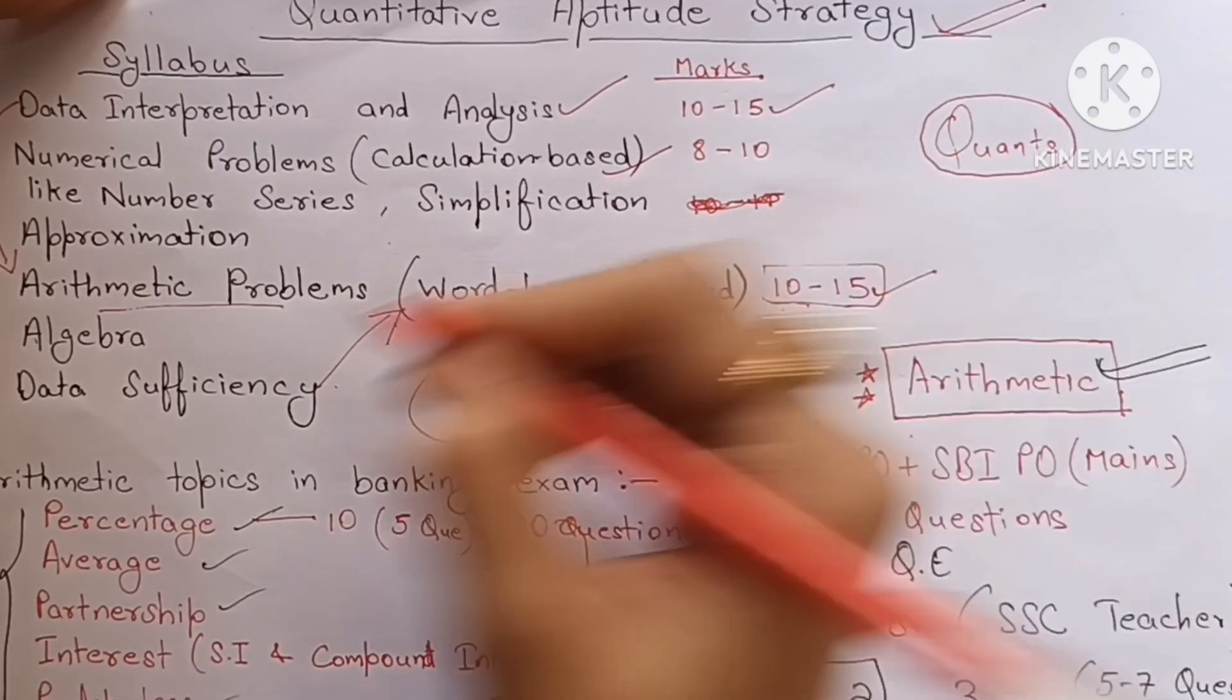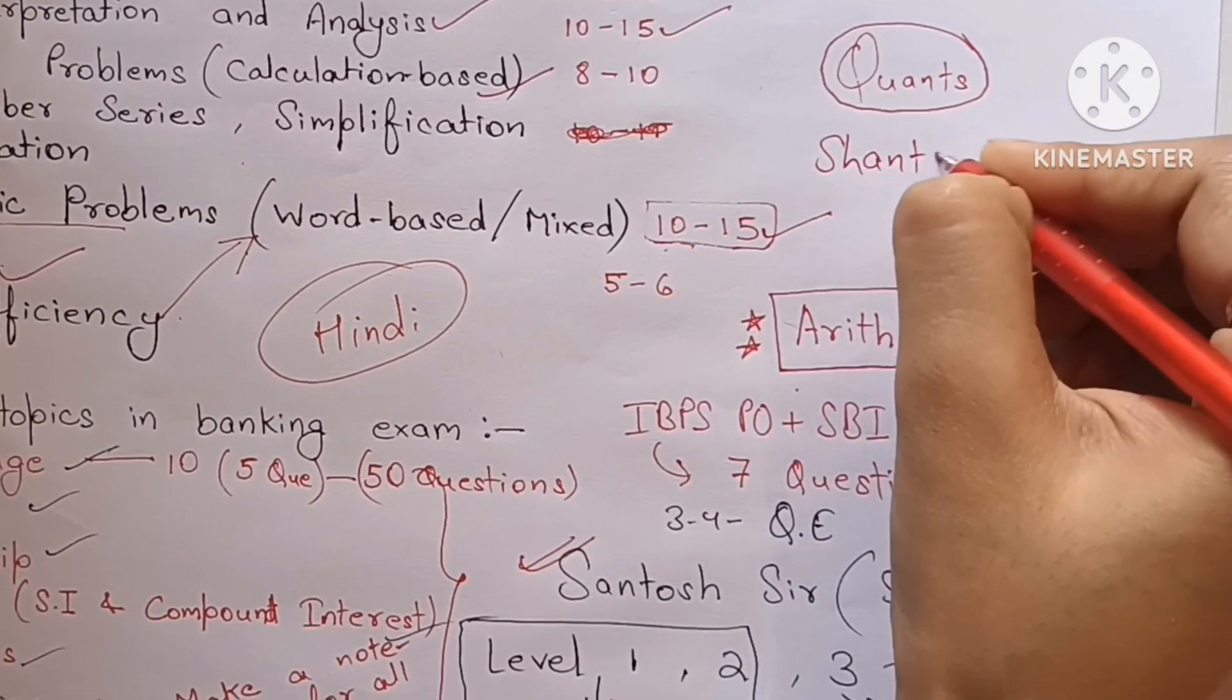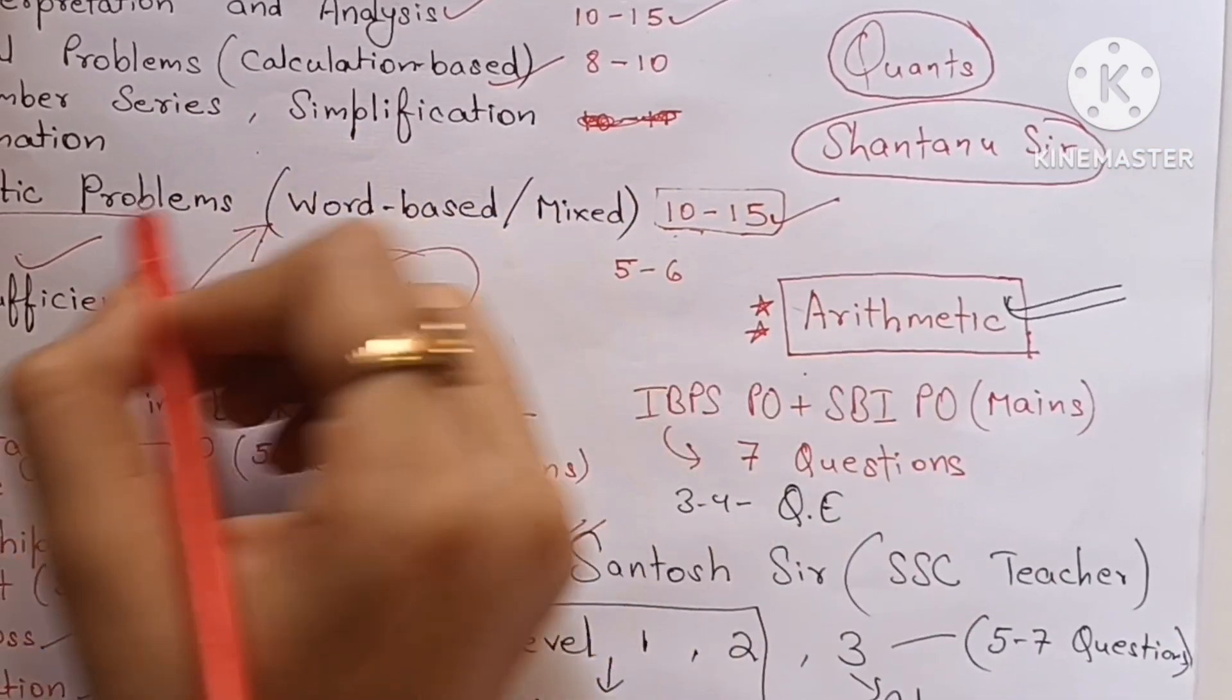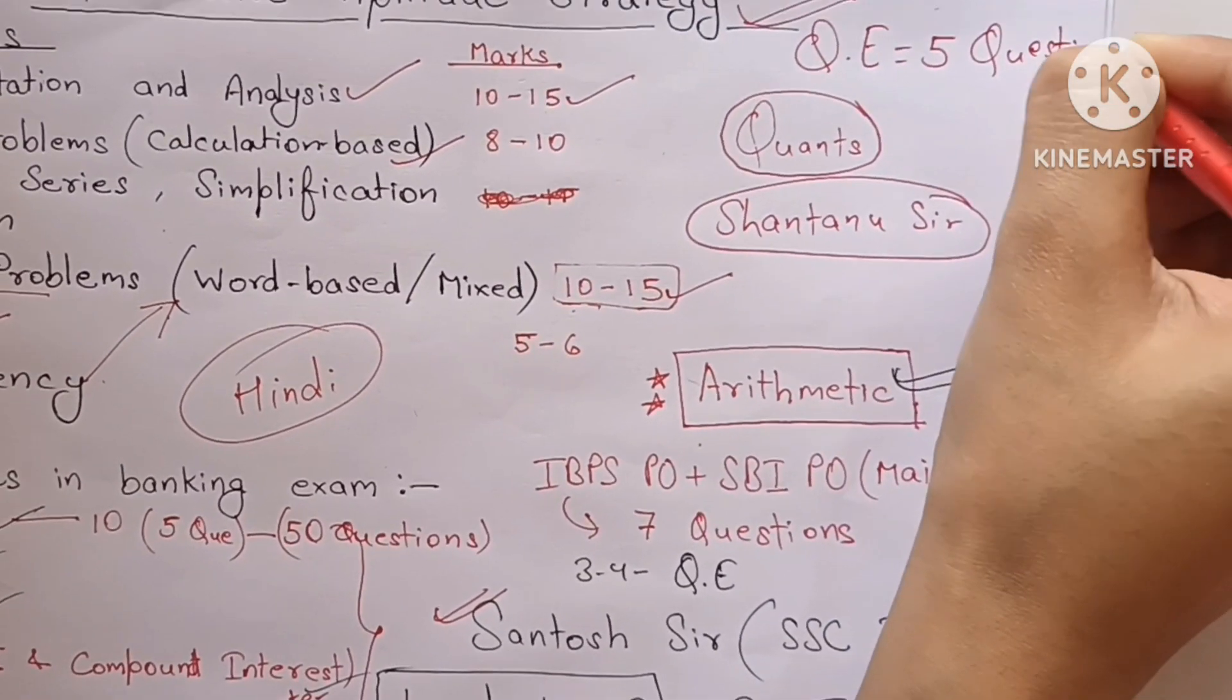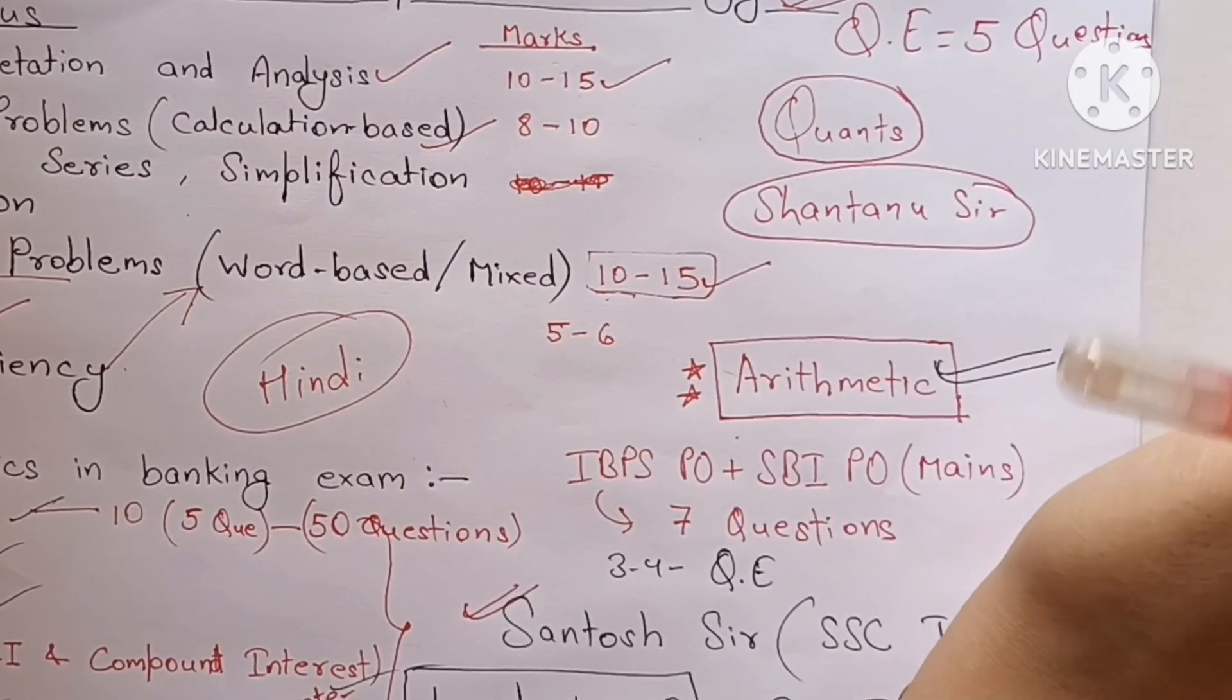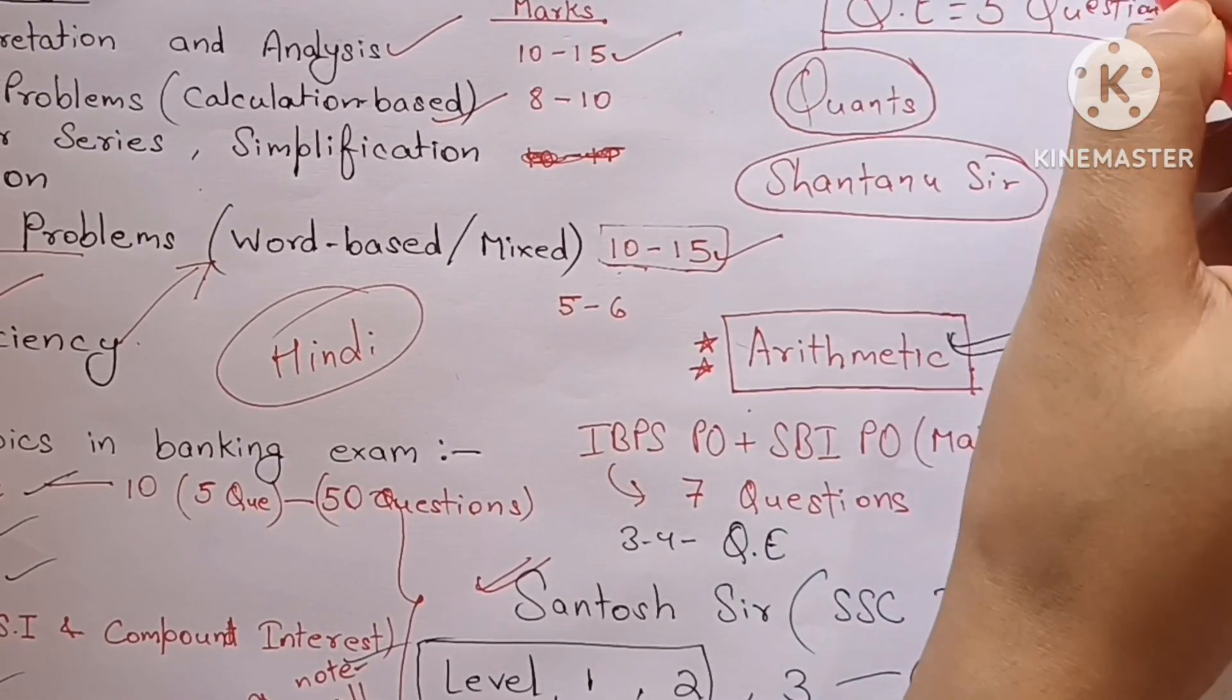And for these topics I followed Santanu Sir. You can study from the teacher of your choice. Practice 20 simplification and approximation questions daily. And another scoring topic is quadratic equation - mostly you will find five questions from this topic in your exams and these five questions are the easiest one to solve. So learn the trick to solve quadratic equation questions. Santanu Sir has taught me.